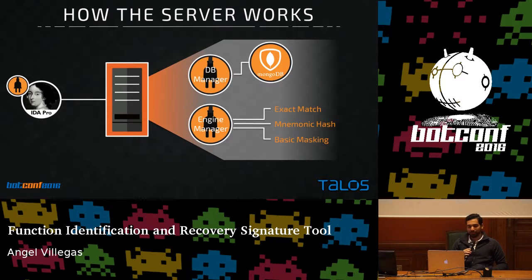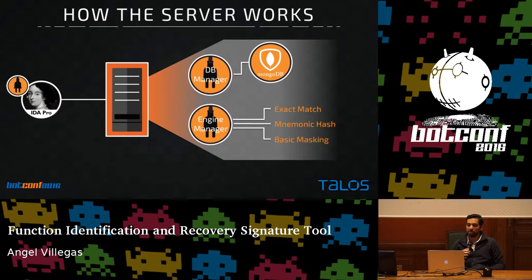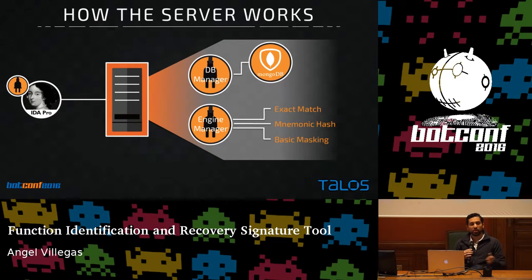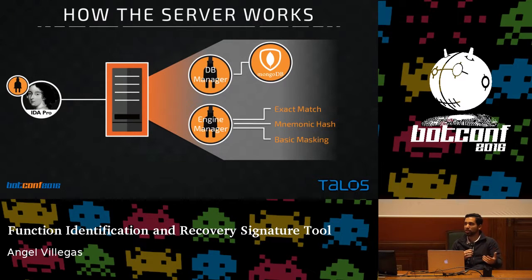The FIRST server exposes a REST API to the plugin, and we're creating APIs and ABIs that work with this REST API so you can integrate it into your own workflow beyond standardized tools. Inside the framework we have a database manager — FIRST leverages MongoDB, which allowed us to build things out quickly. However, FIRST allows you to create a database module that provides a layer of abstraction to interact with whatever data source you require.